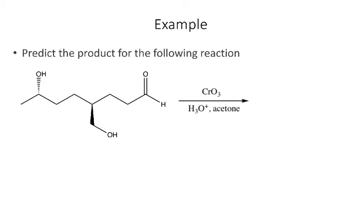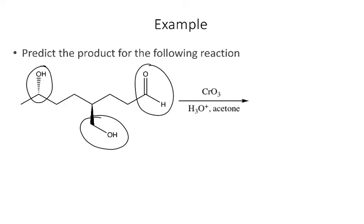In the last example, using chromic acid again: secondary alcohols are converted to ketones, primary alcohols are converted to carboxylic acids, and aldehydes are also oxidized to carboxylic acids. So in this molecule, the secondary alcohol gives a ketone, the primary alcohol gives a carboxylic acid, and the aldehyde is also converted to a carboxylic acid.